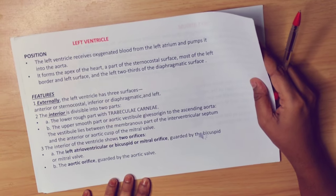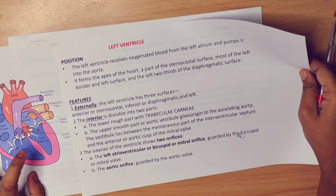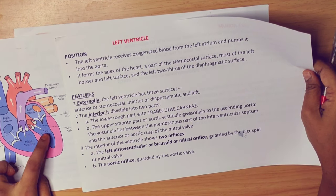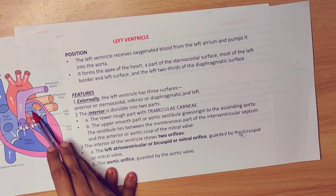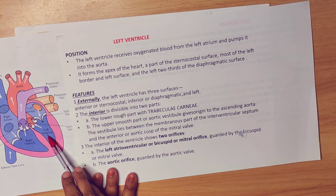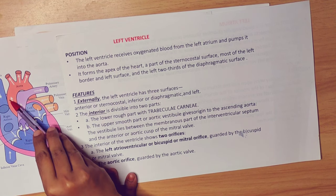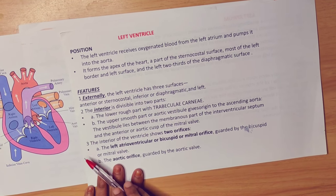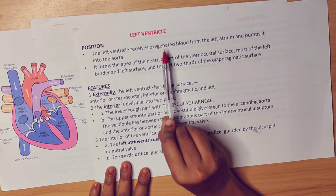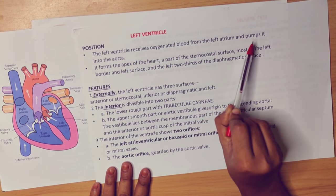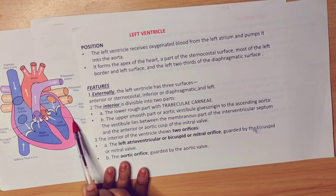Coming to the left ventricle. The left ventricle receives oxygenated blood from the left atrium and pumps it into the aorta, which supplies the whole body. It forms the apex of the heart.